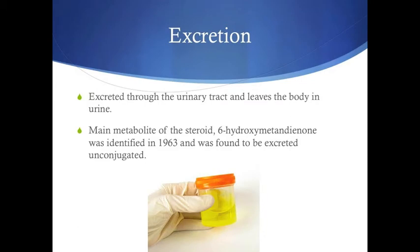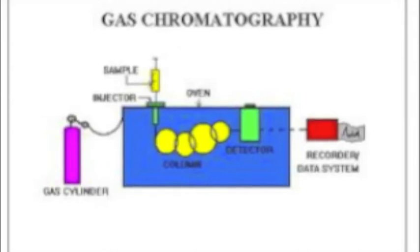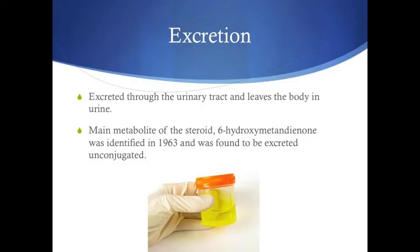Dianabol metabolites are excreted through the urinary pathway and leave the body through the urine. Analyzing human urine through gas chromatography is the method used to check if athletes are using steroids. The urine is checked to see if Dianabol metabolites are present. Although Phase II metabolism does occur for some metabolites, excretion is not entirely dependent on it. For example, the 6-hydroxy metabolite, identified in 1963, was found to be excreted unconjugated. Also, excretion does not occur immediately — the 17-beta-hydroxy methyl metabolite has been shown to be traceable in urine 19 days after administration.